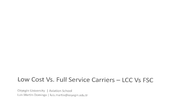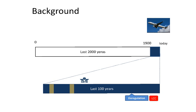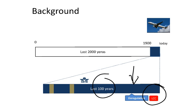This short video aims to explain the main difference between two airline business models: the low-cost model versus the full-service carrier model. As a background, the airline industry has about 100 years of history. At the beginning, we had what we would call normal airlines, but at some point in the late 80s, something called deregulation appeared. Some of the rules applied to airlines were removed, and then low-cost carriers emerged.